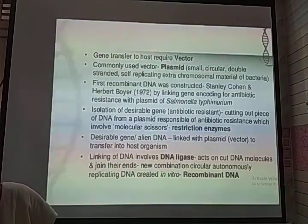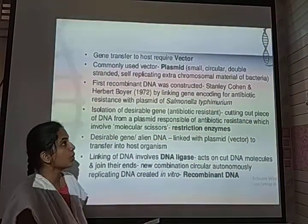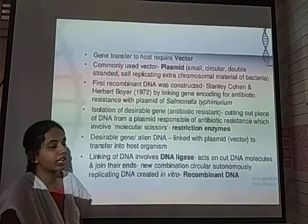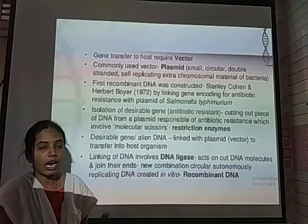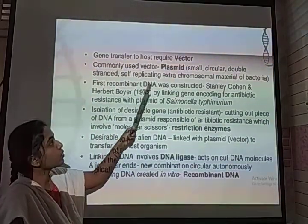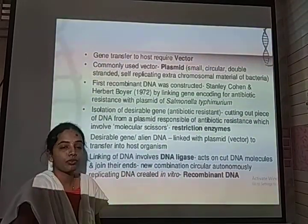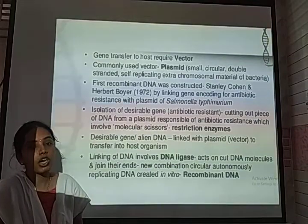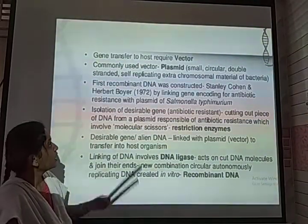The design of recombinant DNA technology uses specific tools. The first one is a vector, which is a vehicle helpful for transforming the desired genes into a host and for multiplication. The commonly used vector is called a plasmid. A plasmid is a small, circular, double-stranded, extra-chromosomal DNA that is autonomic and self-replicating.